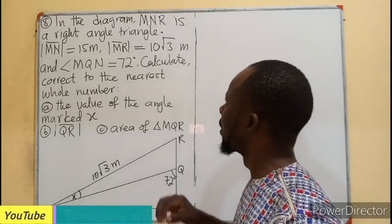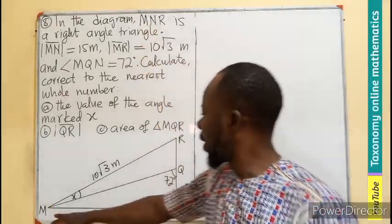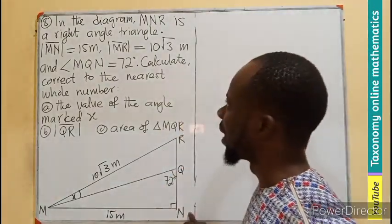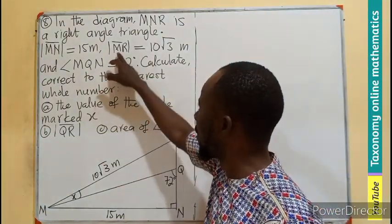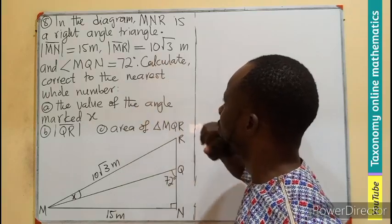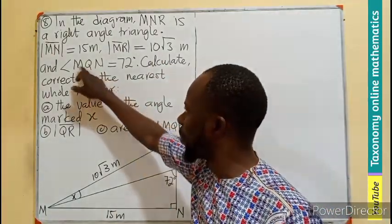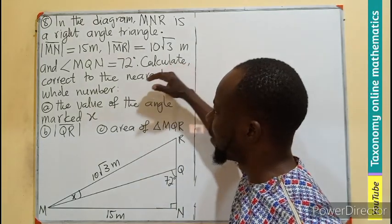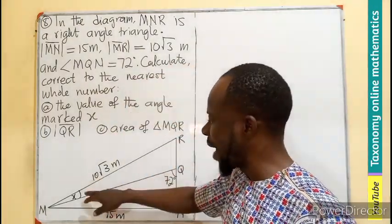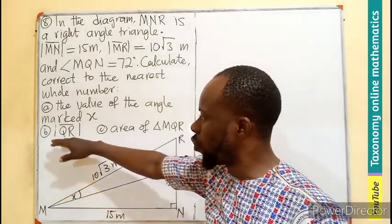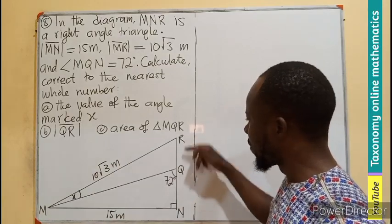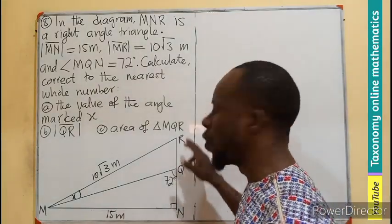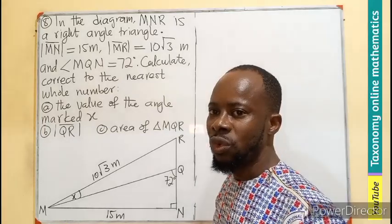So in the diagram, we have triangle MNR, which is a right angle triangle. The side MN is given as 15 cm, and the side MR is provided as 10 root 3 meters. The angle MQN is given as 72 degrees. Our task is to calculate, correct to the nearest whole number, the value of X — the angle marked X — then find the length of QR, and find the area of triangle MQR. So we have three questions using this diagram.